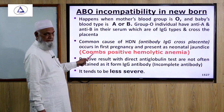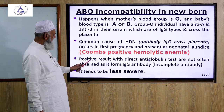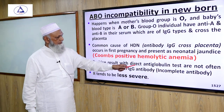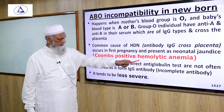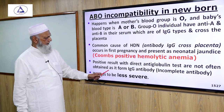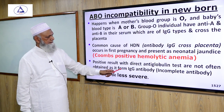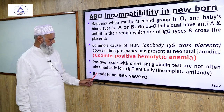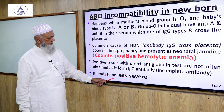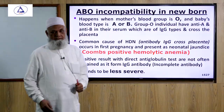ABO incompatibility presents with Coombs-positive hemolytic anemia. However, positive results with the direct antiglobulin test are not often obtained, as the anti-A and anti-B antibodies formed are IgG incomplete antibodies. The disease tends to be less severe compared to Rh incompatibility.